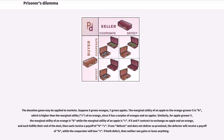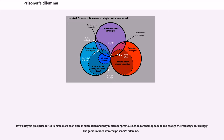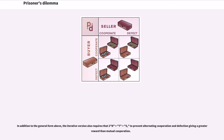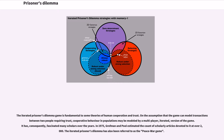If two players play Prisoner's Dilemma more than once in succession and they remember previous actions of their opponent and change their strategy accordingly, the game is called Iterated Prisoner's Dilemma. In addition to the general form above, the iterative version also requires that 2R > T + S, to prevent alternating cooperation and defection giving a greater reward than mutual cooperation. The Iterated Prisoner's Dilemma game is fundamental to some theories of human cooperation and trust. On the assumption that the game can model transactions between two people requiring trust, cooperative behavior in populations may be modeled by a multiplayer, iterated version of the game.